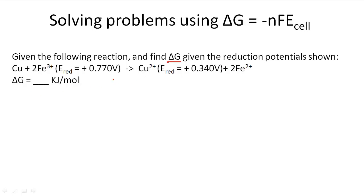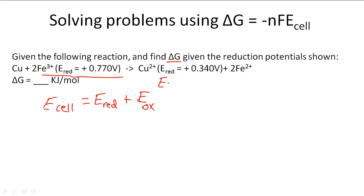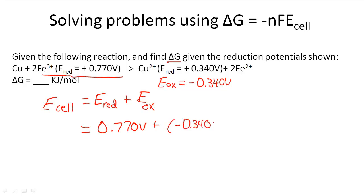Fe3+ is the one that is reduced because it has a higher reduction potential. So the E of the cell equals E_reduction plus E_oxidation. The E of oxidation for Cu is going to be negative 0.340 V. So 0.770 plus negative 0.340 gives us 0.430 V for the cell.